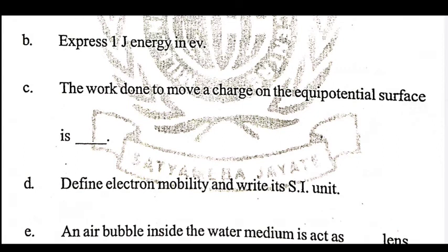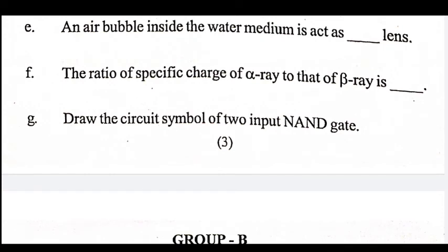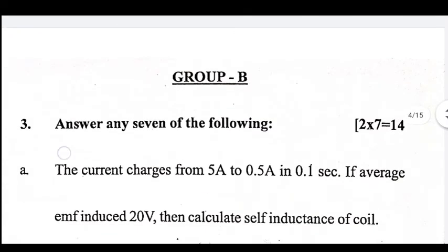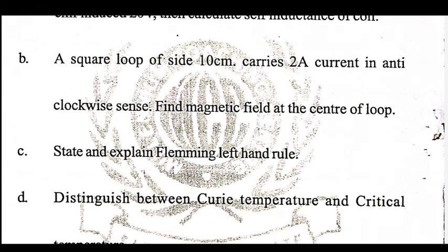Compare alpha ray charges to that of beta ray. Each gas — important question: draw the circuit symbol of a 2-input NAND gate. The current changes from 5 ampere to 0.5 ampere in 0.1 second; if the average EMF induced is 20 volts, then calculate the self-induction of the coil.